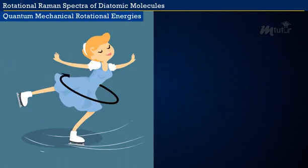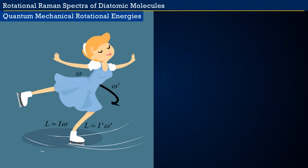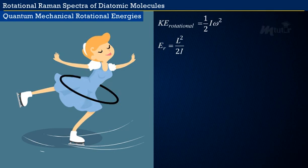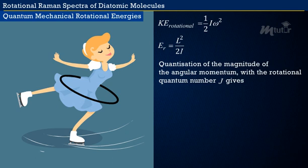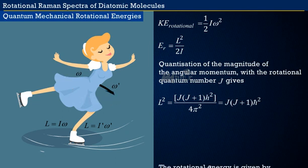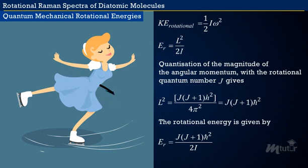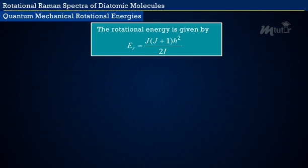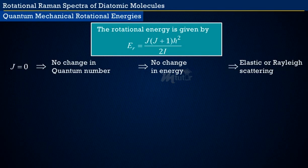From the animation of the ice skating girl, angular momentum equals I·omega. Therefore, rotational kinetic energy equals half I·omega squared, which equals L² divided by 2I. Quantization of angular momentum magnitude with rotational quantum number J gives L² equals J(J+1)·h² over 4·pi², which equals J(J+1)·ħ² where ħ equals h over 2 pi. Therefore, the rotational energy Er equals J(J+1)·ħ² divided by 2I.